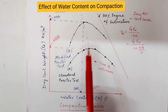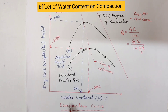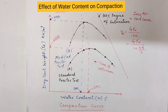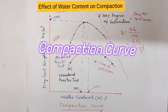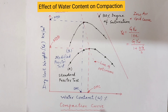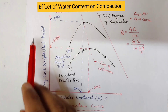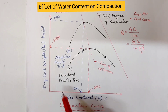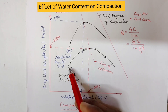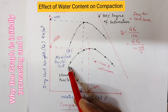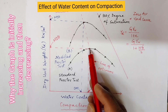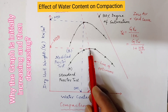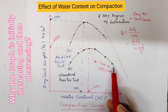Usually, to show the effect of water content, we plot a graph between water content and dry unit weight of the soil. This curve is called the compaction curve, with water content on the x-axis and dry unit weight on the y-axis. The graph is initially increasing up to a certain limit, after which it will start decreasing.